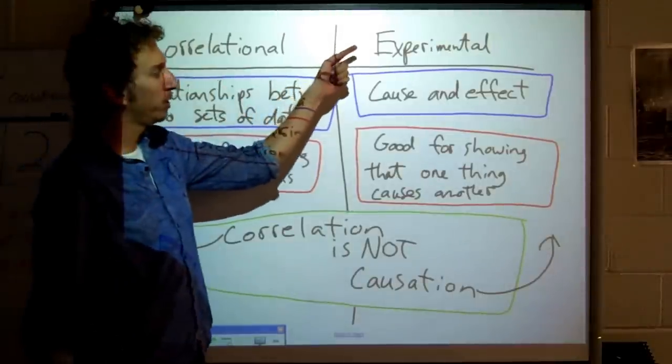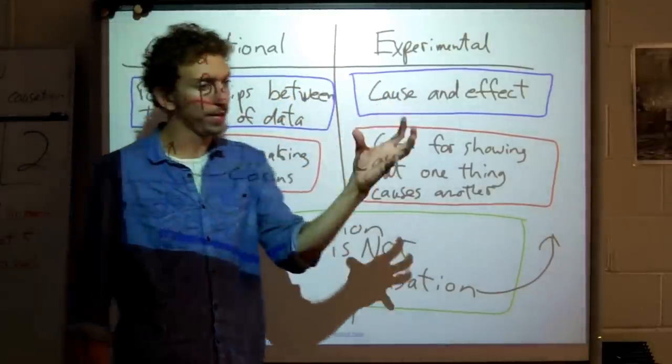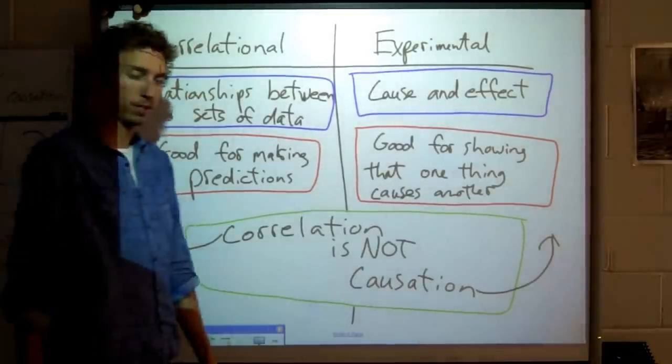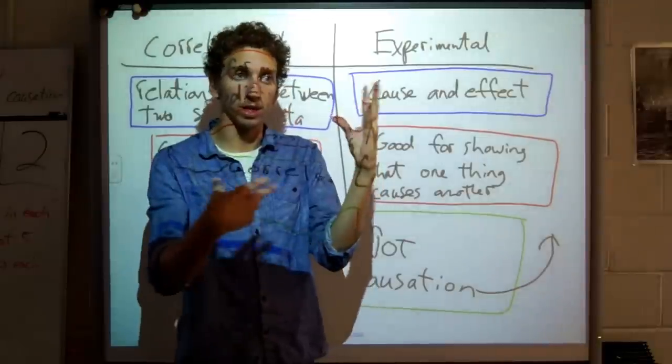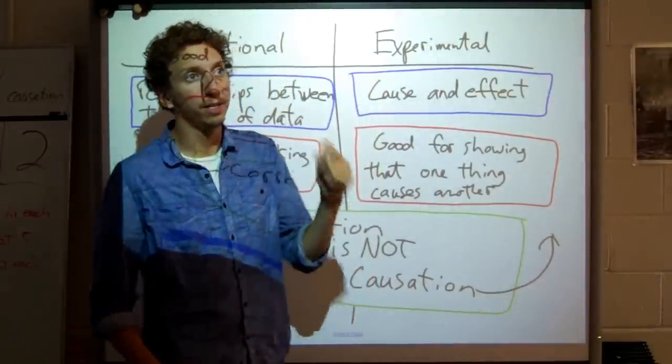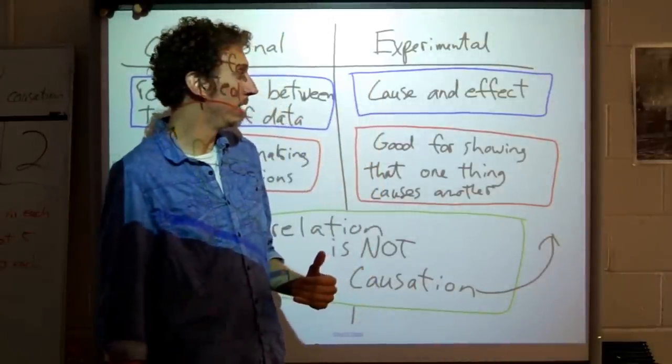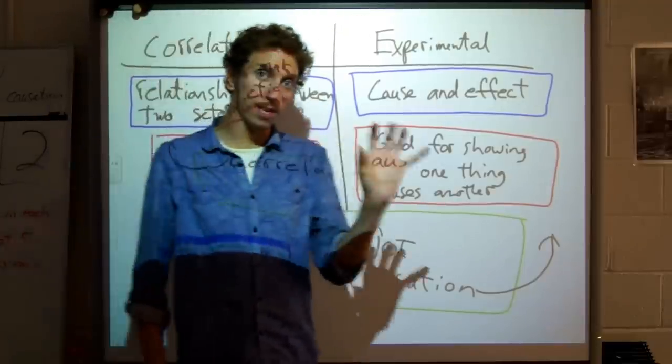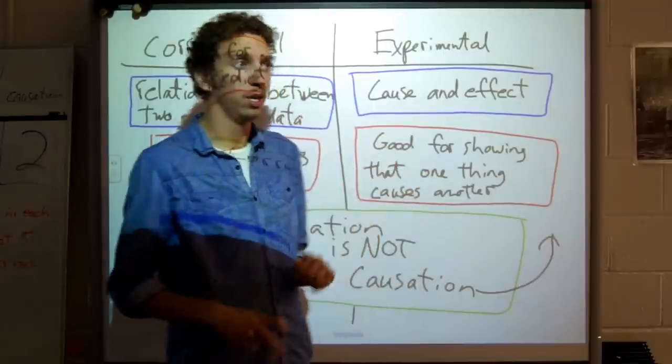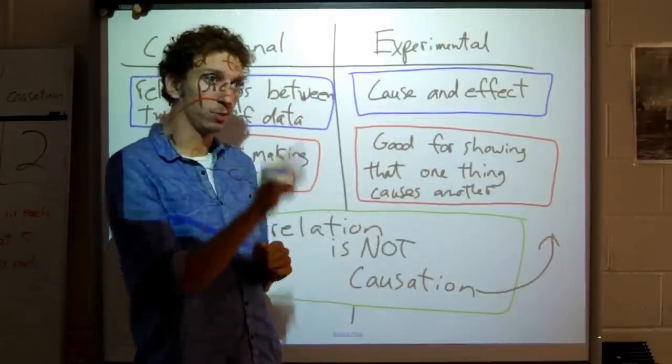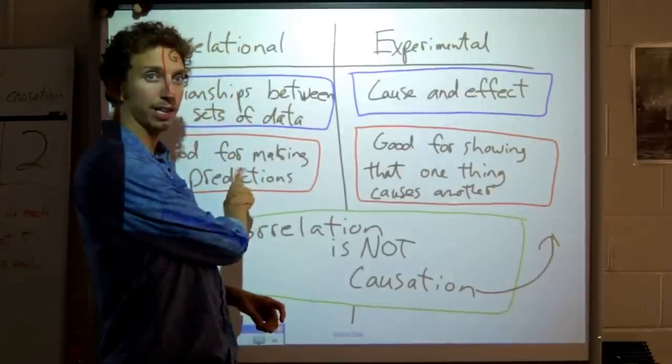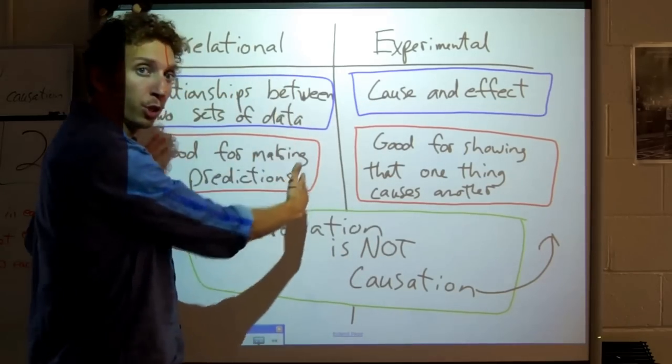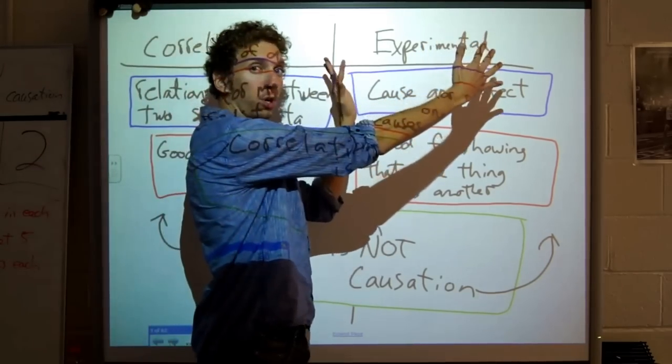An experiment is good for showing cause and effect. One thing happens and it triggers this other thing. Correlational studies are good for making predictions. If you have a correlation between smoking and lung cancer, you can predict with a good deal of likelihood that someone who smokes their whole life will probably get lung cancer. Whereas an experiment is good for showing that one thing causes another, that there's cause and effect, with certainty. Not just that there's a high likelihood that these two things are related.